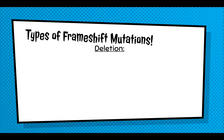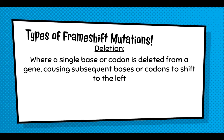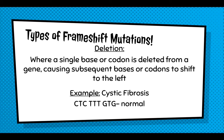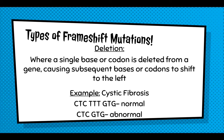The second type of frame shift mutation is a deletion. This is when one single base or an entire codon is deleted from the gene, causing the entire sequence to shift back to the left. For example, in cystic fibrosis, the normal sequence is CTC, TTT, GTG. The abnormal sequence is CTC, GTG — the entire TTT codon has been deleted in that frame shift mutation, causing a whole host of effects. Cystic fibrosis has a lot to do with the lungs' ability to get rid of fluids and can cause very detrimental effects.